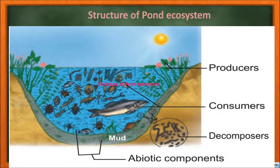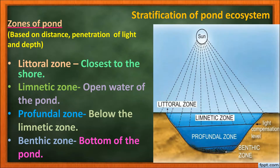Decomposers enrich the soil and the water — the abiotic components of the pond ecosystem. The cycling of nutrients between the abiotic and biotic components makes the pond ecosystem self-sufficient and self-regulating in nature. Now let us learn the stratification of the pond ecosystem.